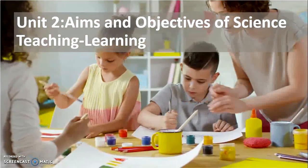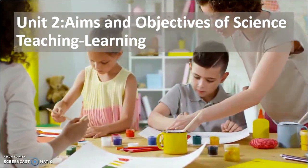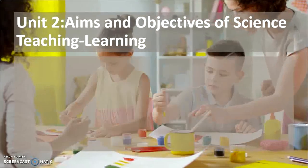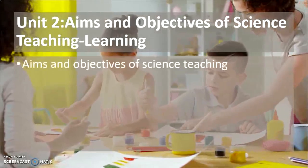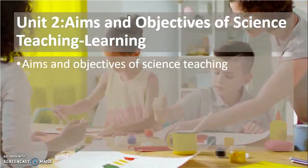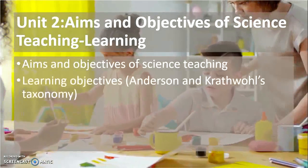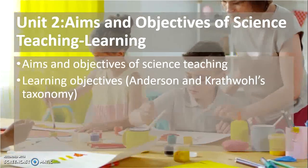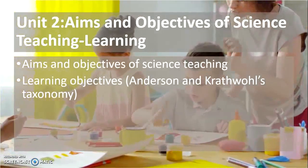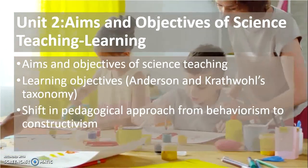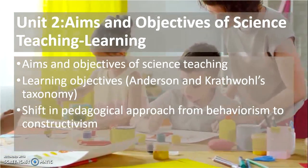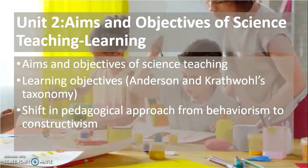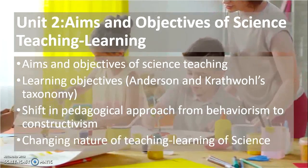Unit two is Aims and Objectives of Science Teaching and Learning. In this unit, we talk about aims and objectives of science teaching, learning objectives specifically based on Anderson and Krathwohl's taxonomy, the shift in pedagogical approach from behaviorism to constructivism, and the changing nature of teaching and learning of science.